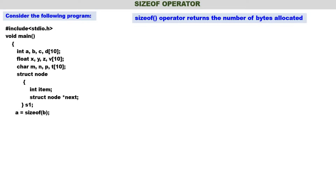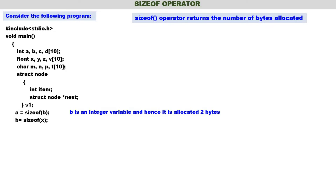Now a is equal to sizeof(b). What is b? b is an integer variable. For an integer variable, two bytes are required. Therefore sizeof(b) is 2. b is an integer variable and hence it is allocated two bytes, so 2 will be stored in a. Next b is equal to sizeof(x). x is a float variable. For a float variable, four bytes are required. So sizeof(x) is 4, and 4 will be stored in b.